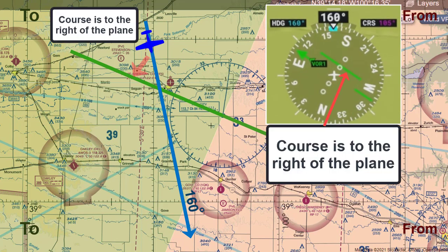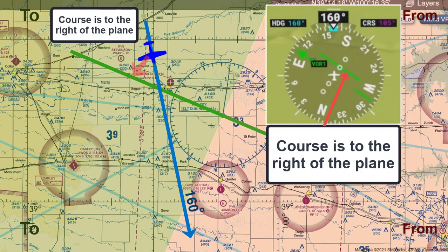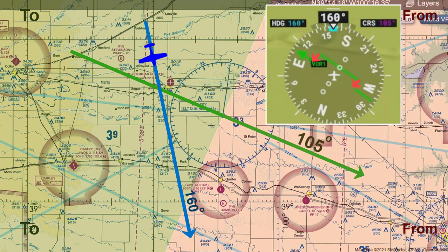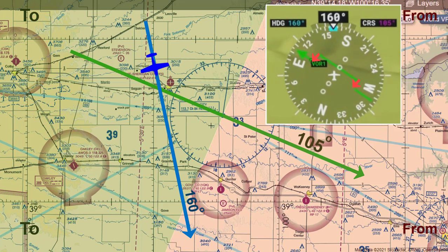Notice, based on our current location, the D-bar is offset to the right, which means the 105 degree radial course is off to the right of where we are located. Also notice the D-bar is moving closer to lining up with the CDI needle, which means we are getting closer to the 105 degree radial course.